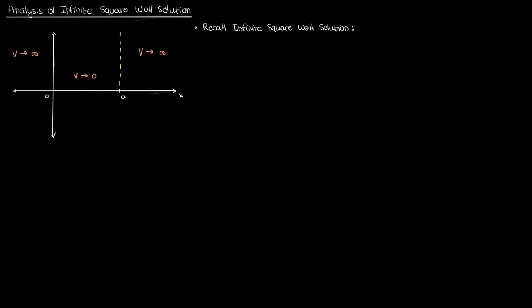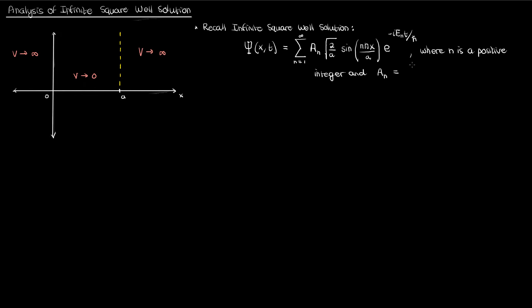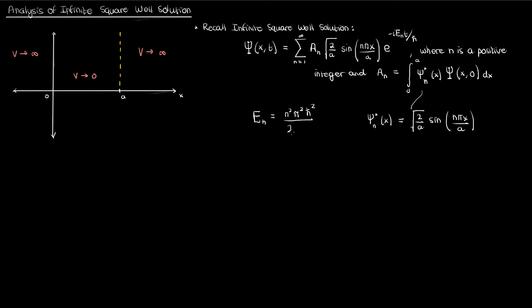In that previous video, which you can find in my quantum mechanics playlist, I showed that the solution to the Schrödinger equation for the infinite square well is given by capital Psi as a giant summation, with the constant a_n in front of each term given by an integral. Note that the small psi_n conjugate is just the expression with the sine, and the energy levels E_n are given by the following expression, where m is the mass of the particle inside the square well whose wave function we're determining.